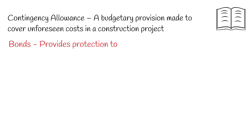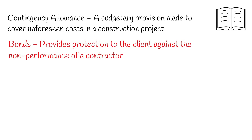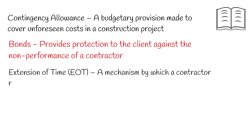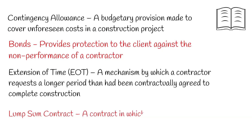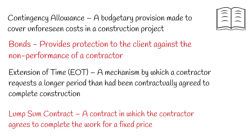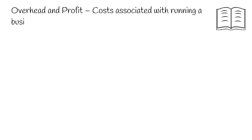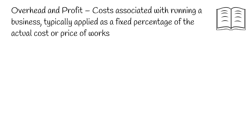Term 11. Bonds — provides protection to the client against non-performance of a contractor. Term 12. Extension of Time — a mechanism by which a contractor requests a longer period than had been contractually agreed to complete construction. Term 13. Lump Sum Contract — a contract in which the contractor agrees to complete the work for a fixed price. Term 14. Overhead and Profit — costs associated with running a business, typically applied as a fixed percentage of the actual cost or price of works.